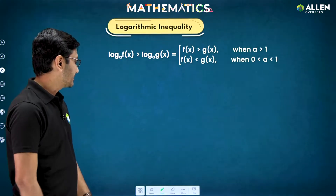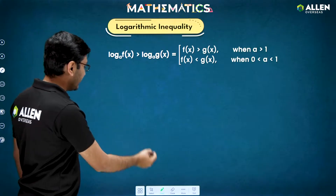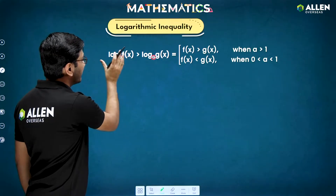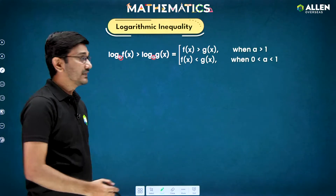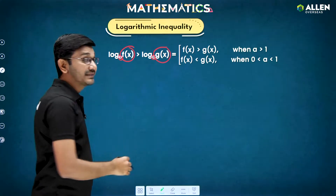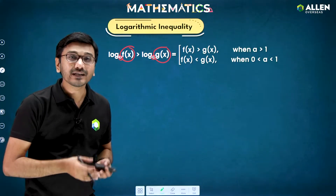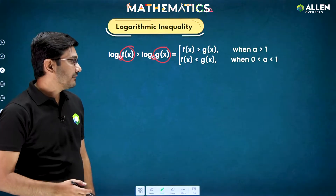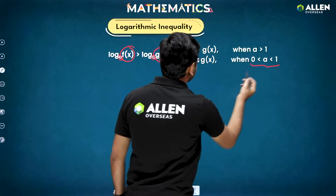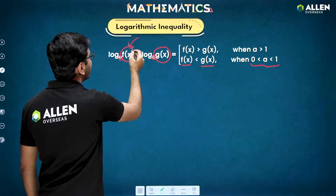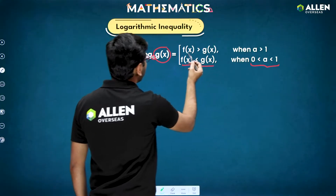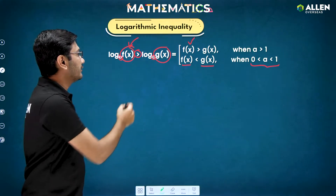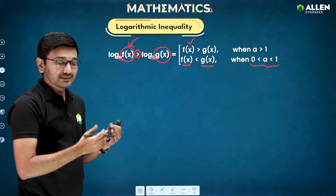When we have log of f(x) to base a greater than log of g(x) to base a — same bases — many students say f(x) must be greater than g(x), but that's not always true. When the base is between 0 and 1, the inequality reverses: f(x) will be less than g(x) even though the log is greater. When base is greater than 1, the order is preserved — greater log means greater function value.